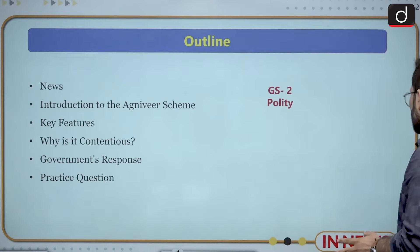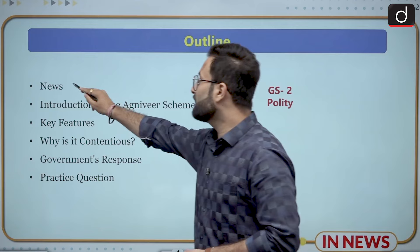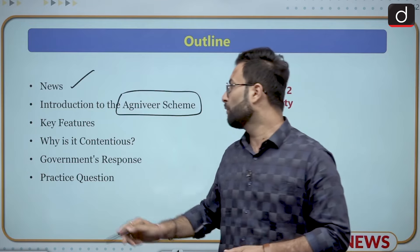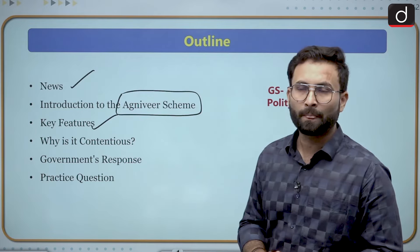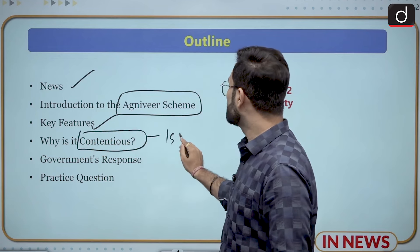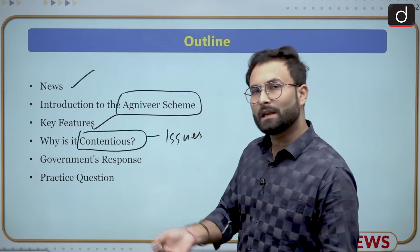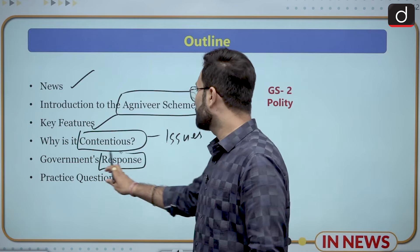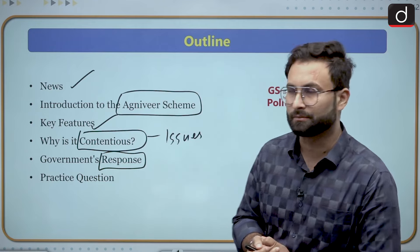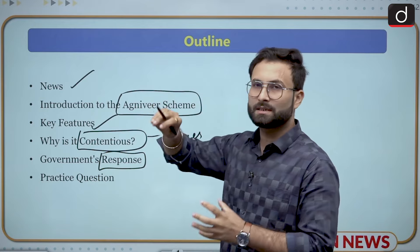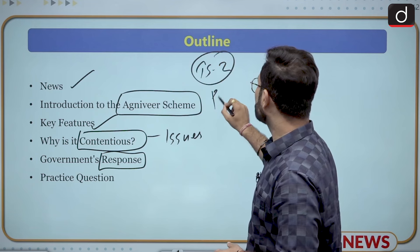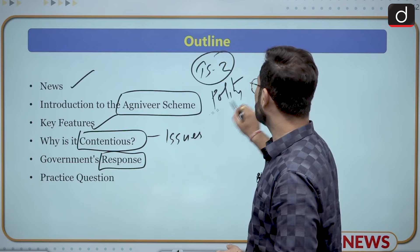Now coming back to our discussion. Today we will start with the news, then move to the Agniveer scheme introduction and key features. After that, we will see why this scheme is contentious and what issues are attached to it. Then we will see what is the government's response, and wrap up the session with a practice question. This discussion is important from your GS paper 2's point of view, attached to the polity section of your syllabus.